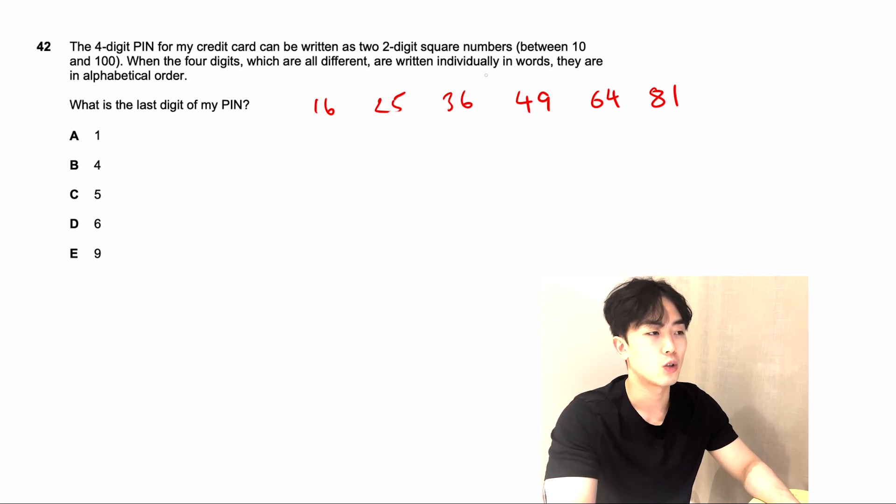And as it says here, they are in alphabetical order. So let's work out the initial letters for each one. So 1 is O, 6 is S, 2 is T, 5 is F, 3 is T again, 6 is S, 4 is F, 9 is N, 6 is S, 4 is F, 8 is E, 1 is O, like so.